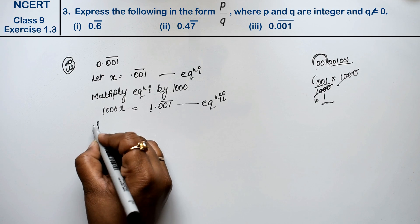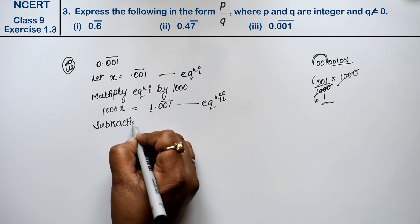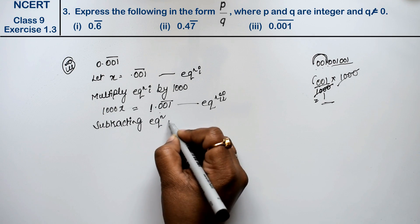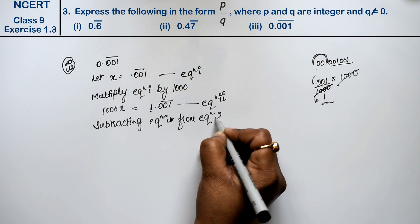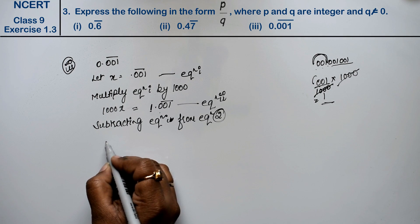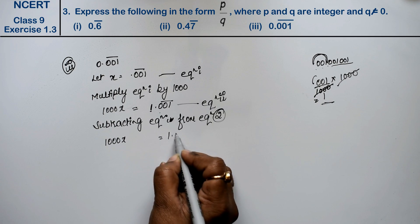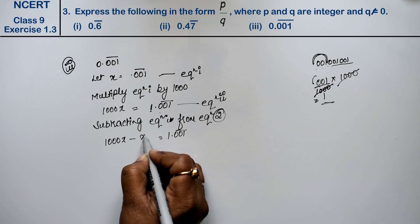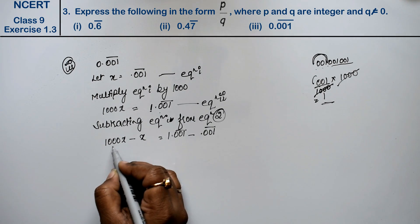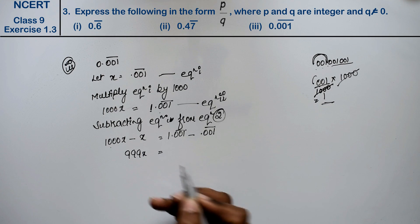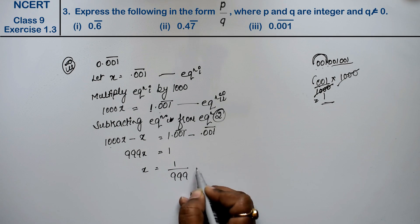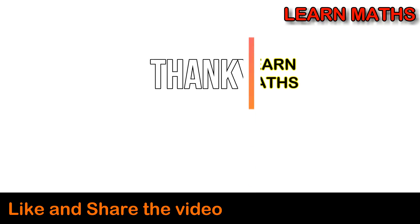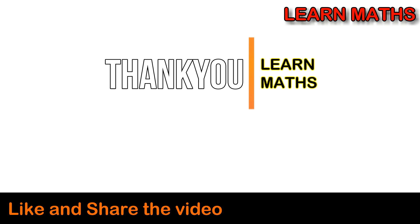Now we subtract equation first from equation second. Second minus first: 1000x minus x gives 999x, and 1.001̄ minus 0.001̄ gives 1. So 999x equals 1, meaning x equals 1/999. This is our answer in p/q form. Thank you. If you understood this step-by-step solution, please subscribe to my channel LearnMaths and share it with your friends.